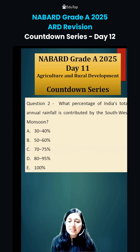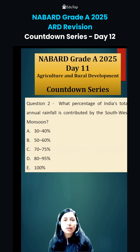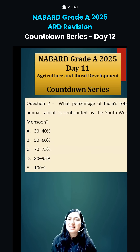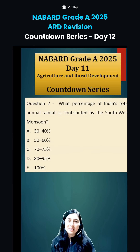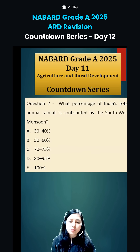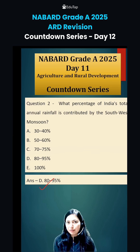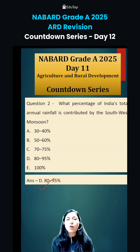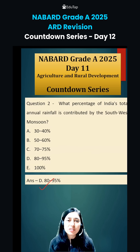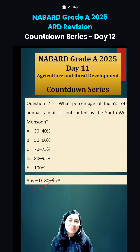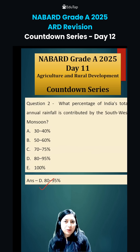The next question was: what percentage of India's total annual rainfall is contributed by the southwest monsoon? This is very, very important. Students, largely the rainfall received by India is from the southwest monsoon, and the answer is 80 to 95%. The onset of the southwest monsoon is from June-July and its offset is around September-October.